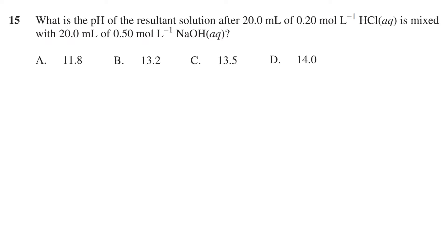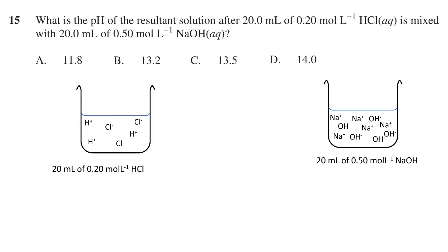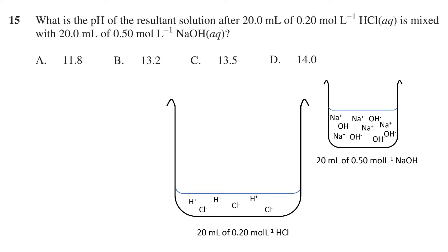To understand what is happening a bit better, we can visualize the scenario described in the question. Let's get a 20 milliliter solution of 0.2 mole per liter HCl, and a 20 milliliter solution of 0.5 mole per liter NaOH. To visualize the resultant solution, let's get a large beaker, add in the HCl, and then add in the NaOH.